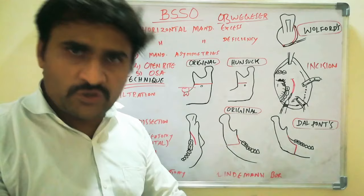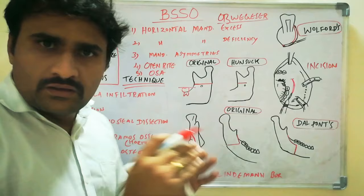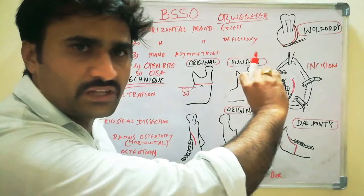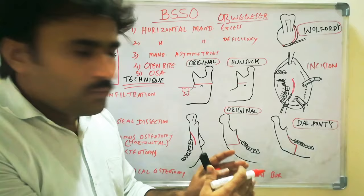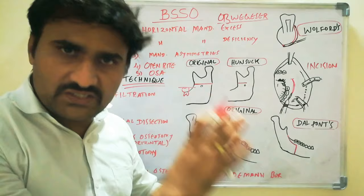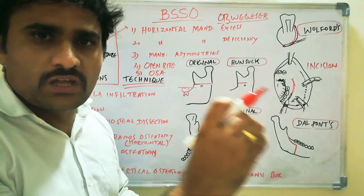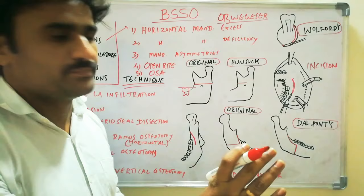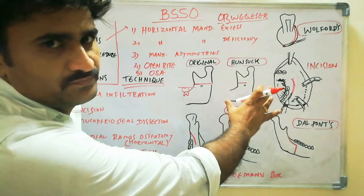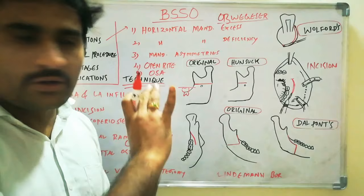Originally as described by Obwegeser, the medial ramus osteotomy should be extended to the posterior border of the ramus. However, Hunsuck modified this osteotomy to be extended only just posterior to the lingula — there is no need to extend to the posterior border. This Hunsuck modification is the currently followed technique.